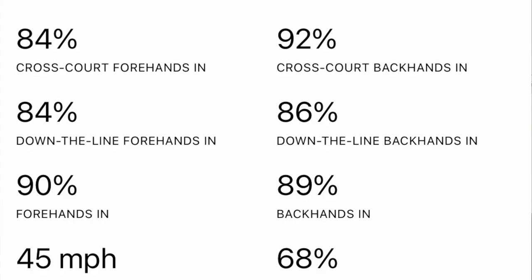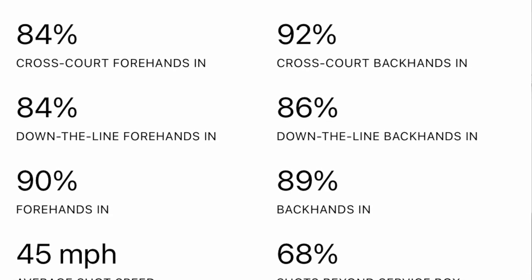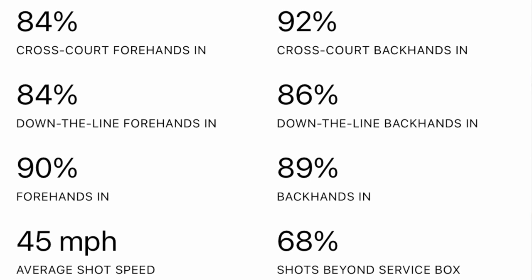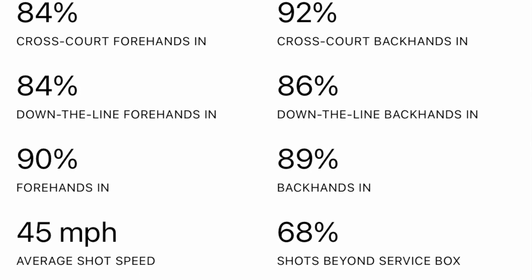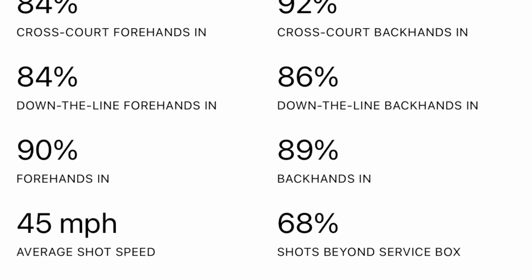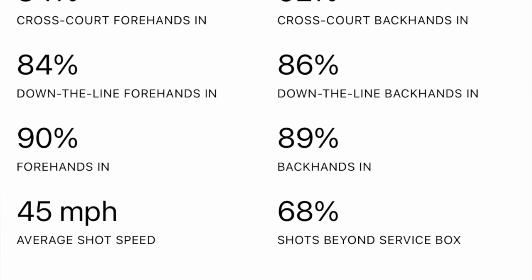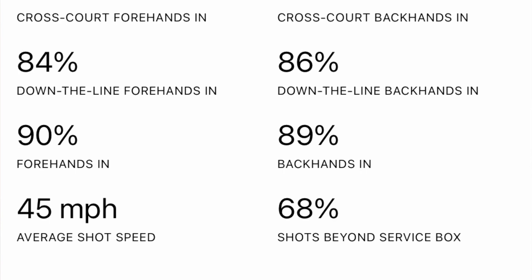If we're going to videotape a set between two kids here, what is Swing Vision going to tell me in terms of stats? We're tracking both player and ball movement, so we're able to analyze things like shot placement, shot speed, and how consistent you are with each of your shot types — forehands cross-court, forehands down the line, backhands cross-court, backhand down the line, serve percentages. We also give you stats to track your depth, so you can see percentage of shots behind the service box. All of this is customizable by stroke type.